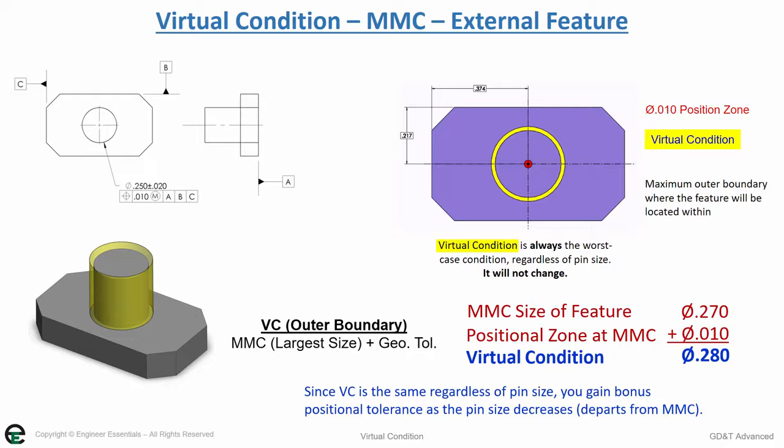Since the virtual condition is the same regardless of how big or small your pin is, you gain bonus tolerance as the pin size decreases or departs from MMC, however your virtual condition maintains the same size.